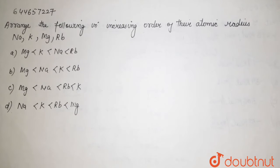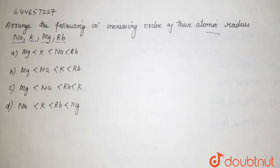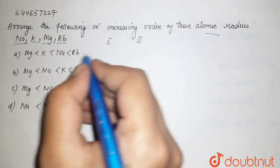...of atomic radius. So we are having sodium, potassium, magnesium, and rubidium. So atomic radius - let's see the position in the periodic table. This is your group one and this is your group two. Group one, it...